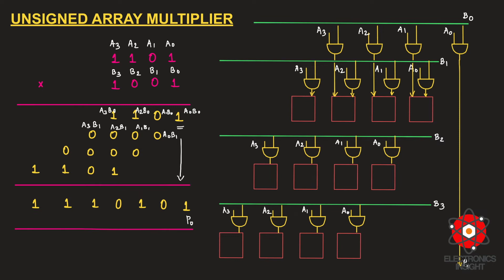Proceeding to the second stage, all partial products from the first stage are passed down. The second-stage partial products are a0·b1, a1·b1, a2·b1, a3·b1. The bit a0·b0 becomes p0, and a1·b0 must be accumulated with a0·b1. Since there are only two bits to add here, a half adder is sufficient — a full adder would be wasteful as it handles three bits.